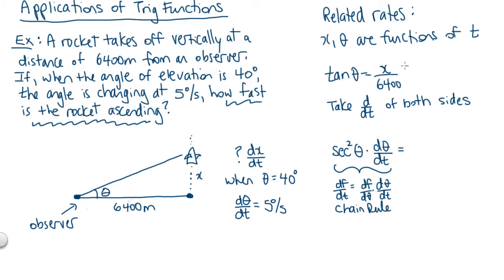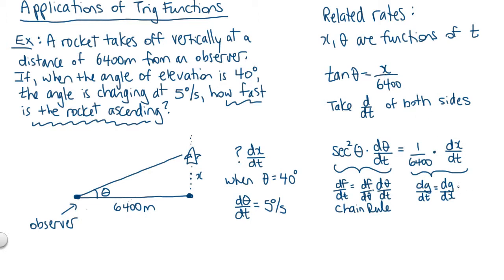On the right side, we take the derivative of x over 6,400 with respect to t. Taking the derivative with respect to x gives 1 over 6,400, and then we multiply by dx/dt. If you want to think of the formula: let g equal x over 6,400, then dg/dt equals dg/dx times dx/dt. So the result is: secant squared theta times d-theta/dt equals 1 over 6,400 times dx/dt.